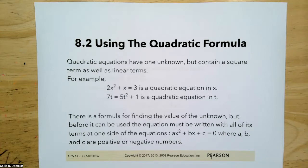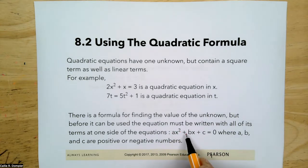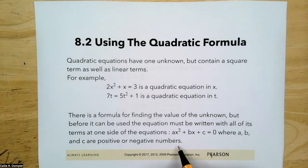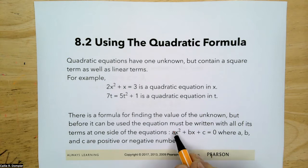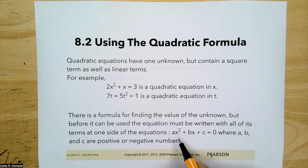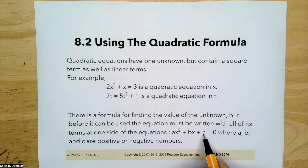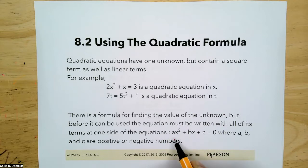Let's get started using the quadratic formula. Quadratic equations are written as ax squared plus bx plus c equals zero, where a, b, and c are positive or negative numbers. b can be zero, c can be zero, but a cannot be zero. To be a quadratic equation, you must have an x squared term. a can be one, so it can just be x squared.